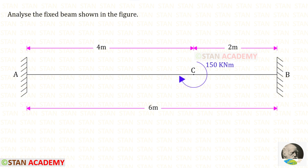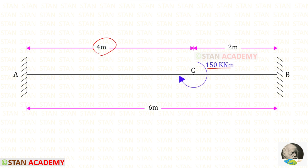Hello everyone. Today we are going to analyze this fixed beam by consistent deformation method. The span of the beam is given as 6 meters. This beam carries a concentrated moment of 150 kilo Newton meters at a distance of 4 meters from the left support, acting in the clockwise direction.